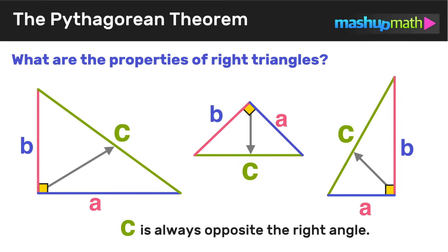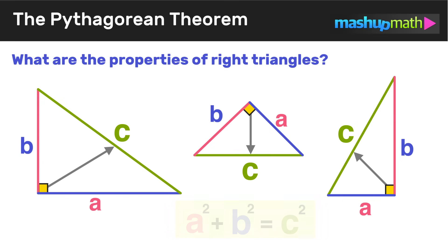This is very important because labeling correctly will allow you to use the Pythagorean theorem to solve examples. Now we're ready to take a look at a few of those examples.